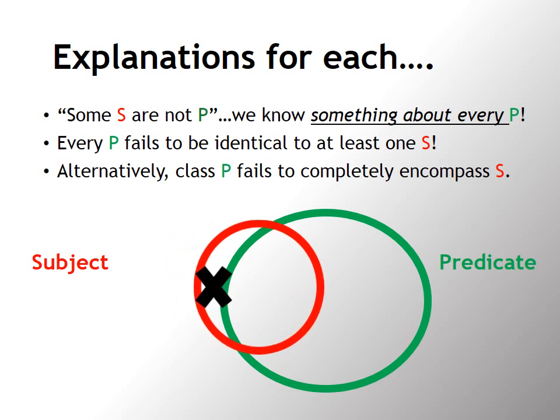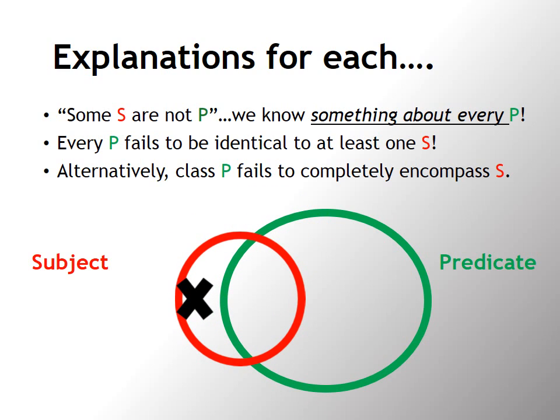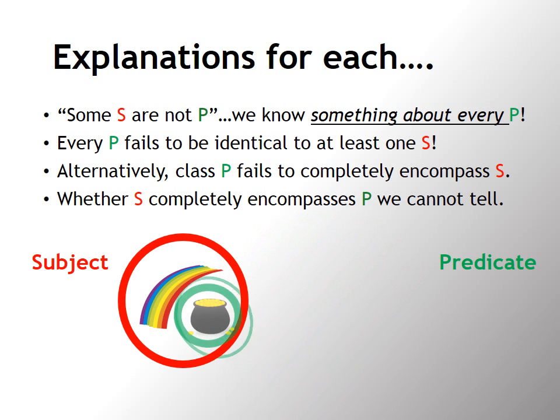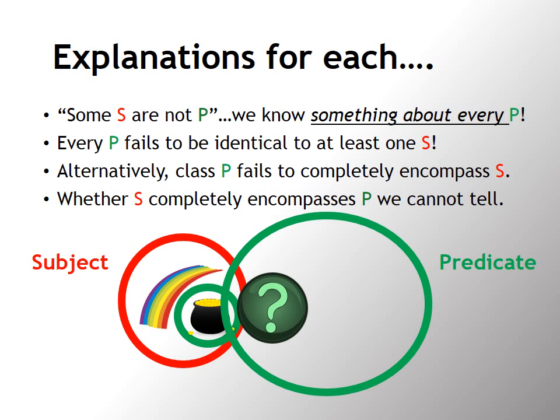So, no matter what, P is not going to be sufficient to completely envelop or cover all the members of S. And another way to think about it, if you recall our example involving rainbows and pots of gold, not every rainbow has a pot of gold, which means some rainbows are not things that have pots of gold. Now, for all that tells us, we can't tell whether S completely encompasses P or not. Maybe rainbows are the only thing on the planet that has pots of gold in it. I haven't seen a pot of gold in my lifetime, but for all that sentence tells me, rainbows might be the only place to find them.